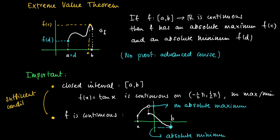So both conditions, closed interval in combination with continuity, are sufficient conditions for existence of extreme values. These are not necessary conditions though. Maybe you can think of what it means what I just said.